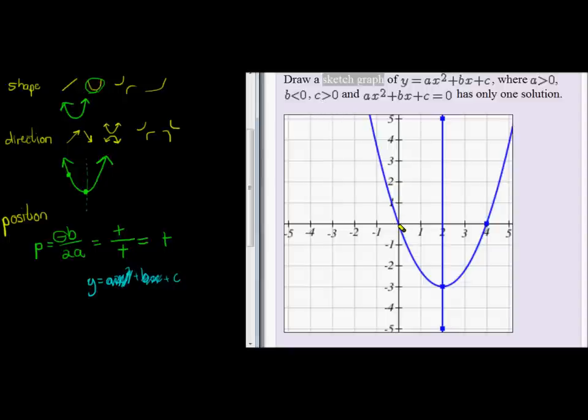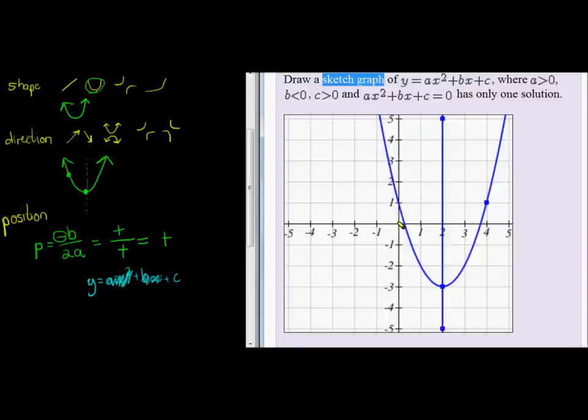In other words, the y-intercept should be positive. This is not working, so let's just, there we go, that's better. Now my y-intercept is positive. When x is 0, my y-intercept is greater than 0.